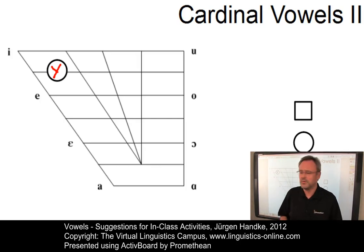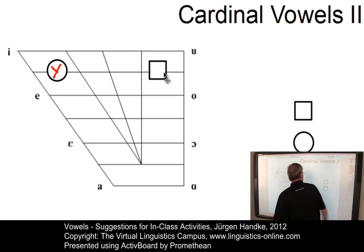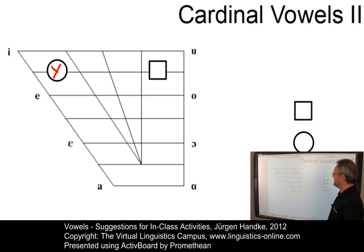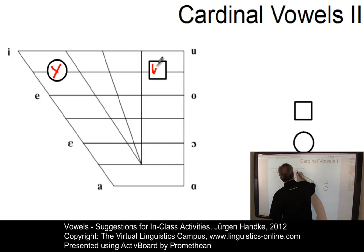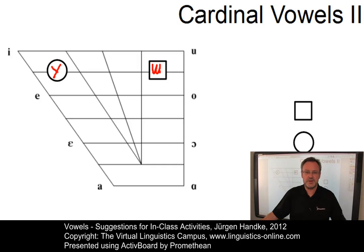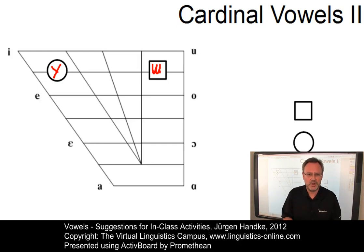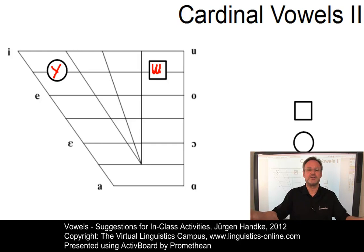Or what about this one? Here we have an unrounded high back vowel, and the symbol that is used is this one. The result is something which is very hard to produce for many speakers whose languages don't have this sort of vowel. Here's the advice: produce a rounded one first, which is easier — produce a 'u'. And then spread your lips, keep the tongue where it is. And there you are.